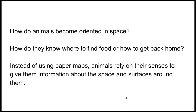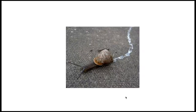How do animals become oriented in space? How do animals know where to find food or how to get back home? Instead of using paper maps, animals rely on their senses to give them information about the space and surfaces around them. Bats rely on their hearing more than their vision to navigate through space. Snails are almost completely blind and deaf and use their heightened sense of smell to find food.